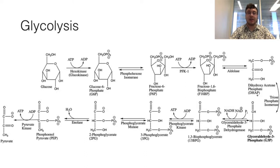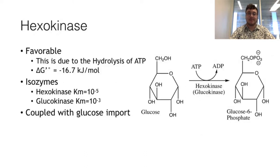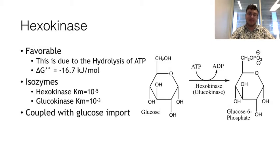The final product of glycolysis is pyruvate, which has many potential fates. The first step of glycolysis is the conversion of glucose to glucose-6-phosphate, which is done by hexokinase. This reaction is favorable due to the hydrolysis of ATP, and it is one of the steps which directly causes energy investment.